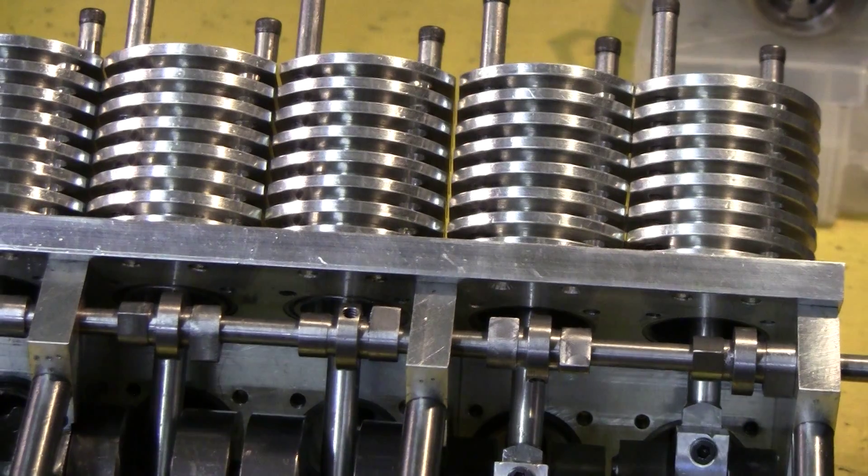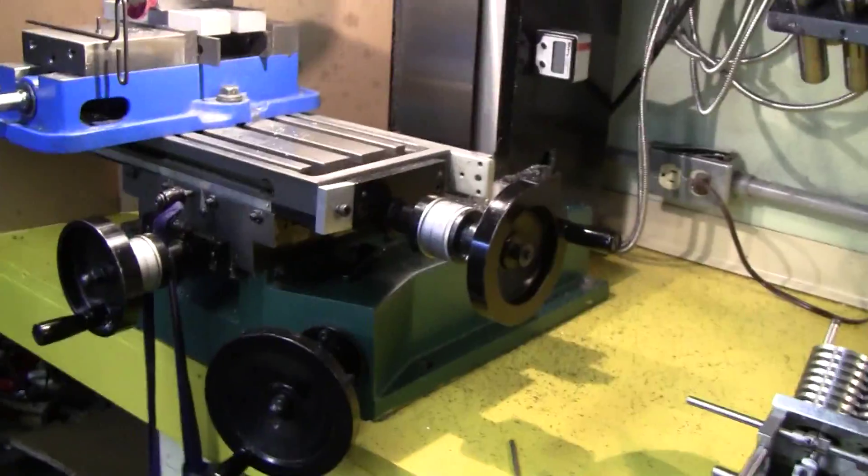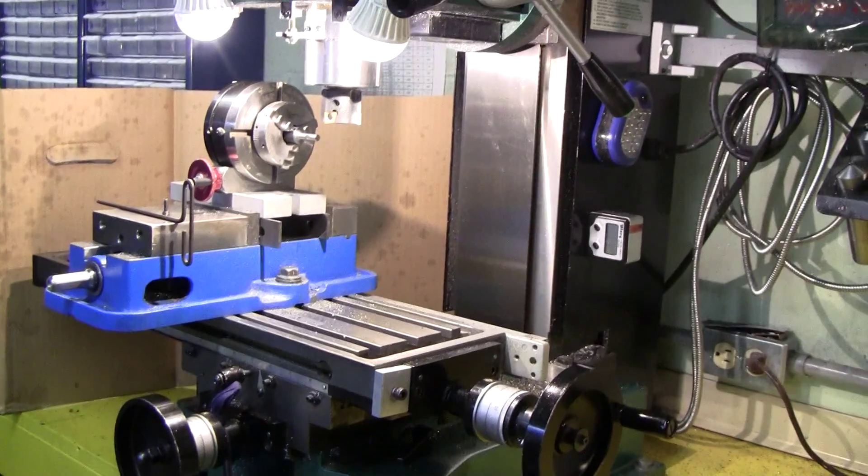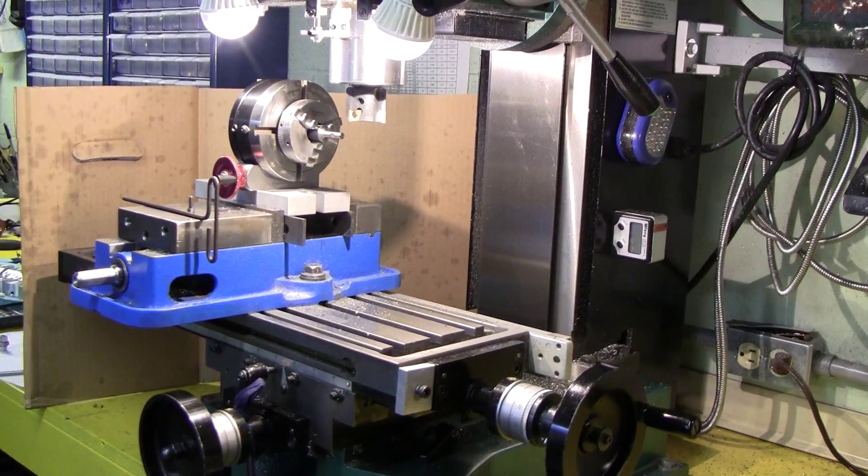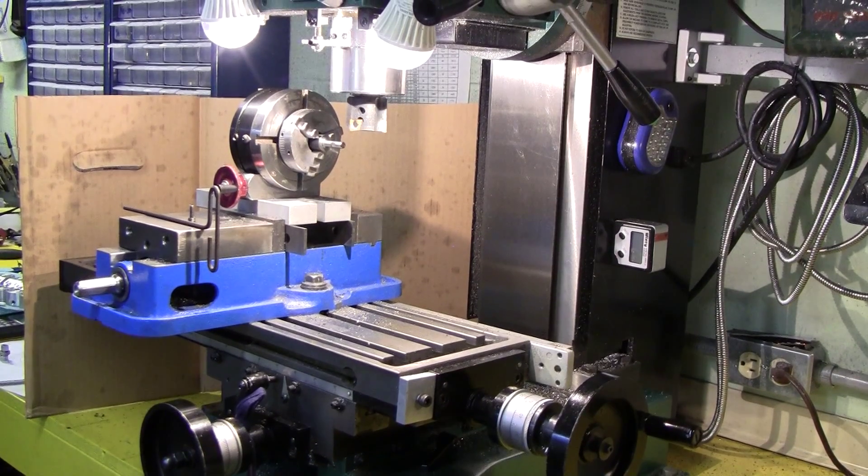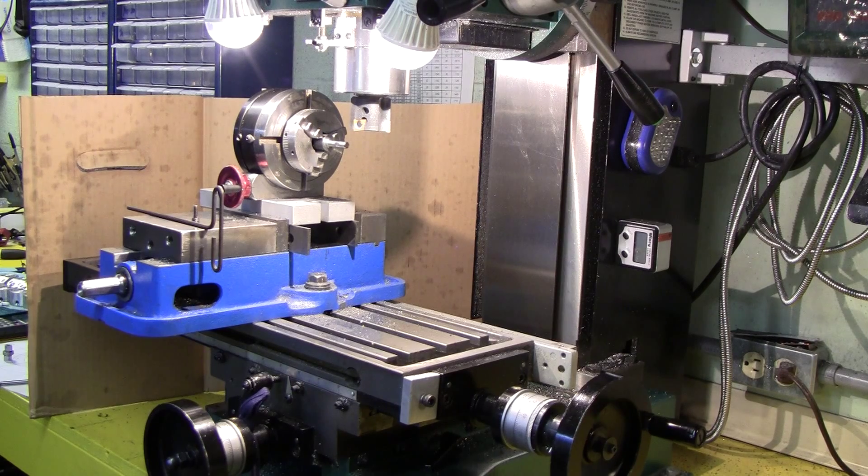So we'll show you how we do this. Here's my setup: I have my four inch rotary table mounted in the vice on the mill, and I have a carbide cutter that I'll be using to cut these flats.